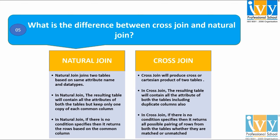Finally, in a natural join, if there is no condition specified then it returns the rows based on the common column. And in a cross join, if there is no condition specified then it returns all possible pairings of rows from both the tables, whether they are matched or unmatched.